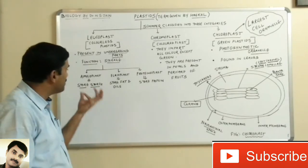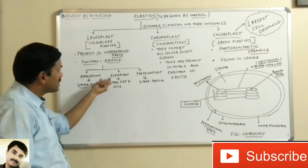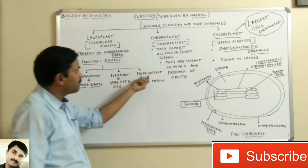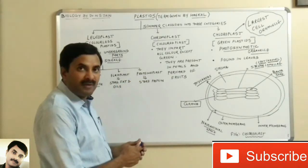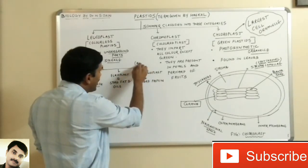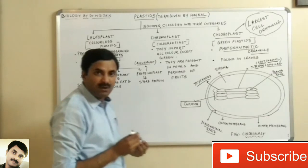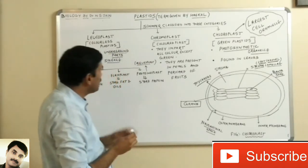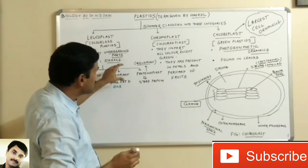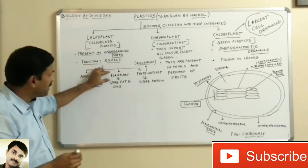The leucoplasts are divided into three categories: amyloplasts, elioplasts, and proteinoplasts. This classification is done on the basis of storage. Amyloplasts store starch, elioplasts store fats and oils, and proteinoplasts store protein. Proteinoplasts are also called aleuroplasts.